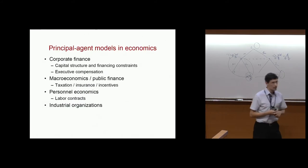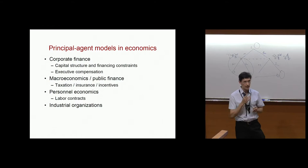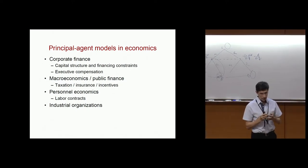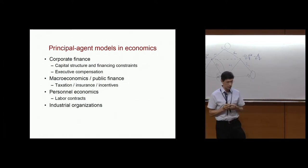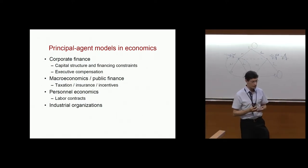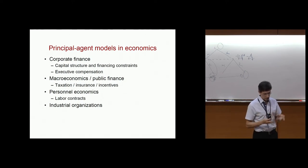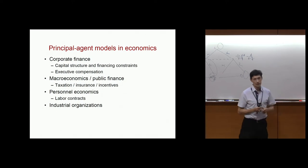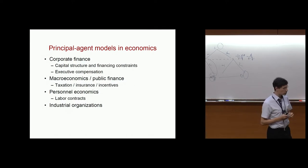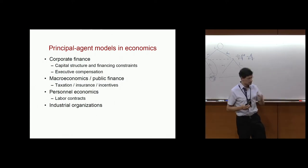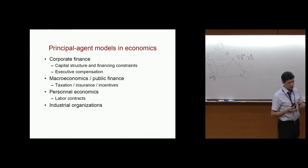Dynamic contracts are important in economics and they arise in many different fields. In corporate finance, the question of capital structure of a firm — how much debt and how much equity the firm has, and what kinds of incentives capital structure creates — for example, conflict of interest between debt holders and equity holders is one example. Executive compensation is another example. In macro, it's a big question, such as optimal dynamic taxation and the types of distortionary incentives that taxes generate, labor contracts and industrial organizations.